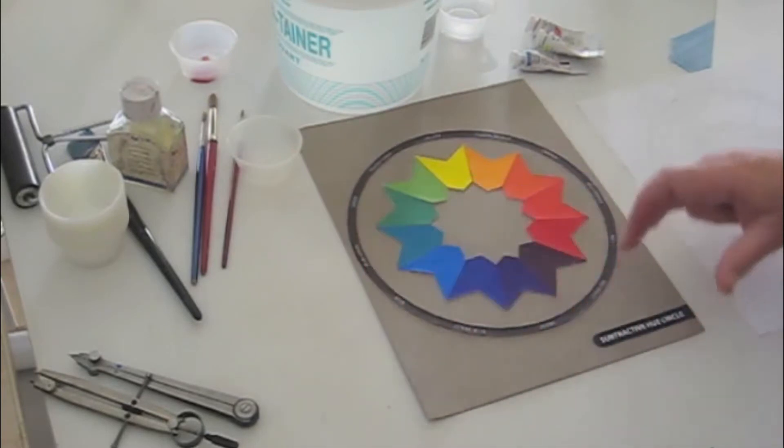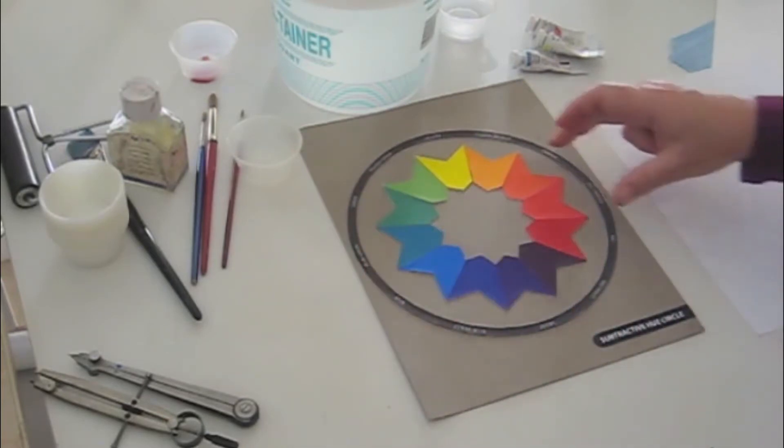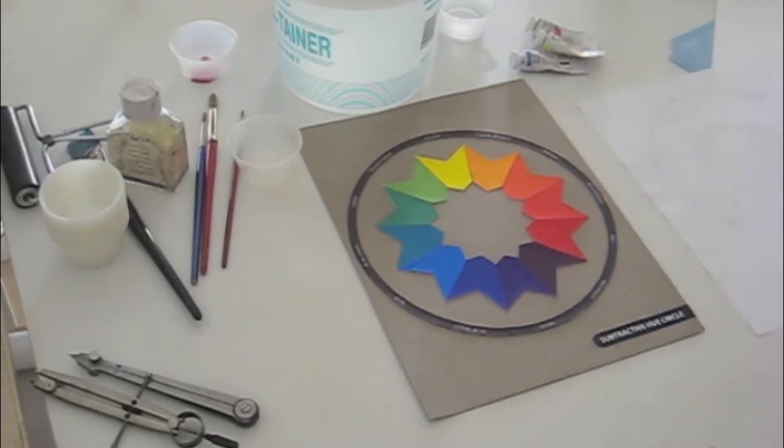You will need to label the hues around. You can handwrite them or print them out, however you want to do it, as long as it's neat. What we want is a well-executed circle.